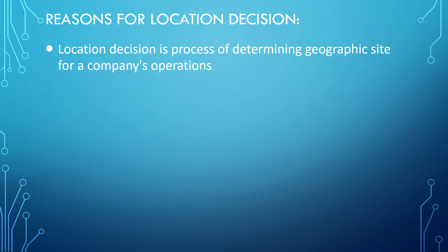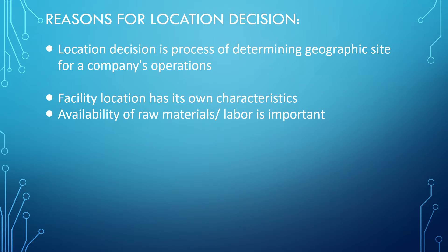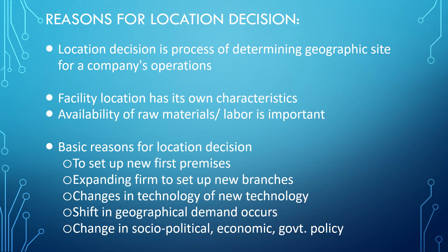Location decision is the process of determining the geographic site of a company's operations. Facility location has its own characteristics, including availability of raw materials and labor. The basic reasons for a location decision include setting up the first premises, expanding the firm, setting up new branches, changes in technology, shifts in geographical demand, and changes in socio-political, economic, and government policy.